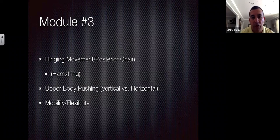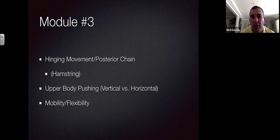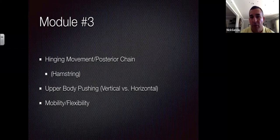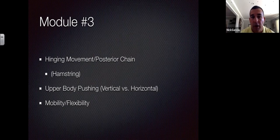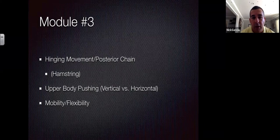Module three, the final module: a hinging movement focused on the posterior chain, primarily the hamstrings. I train all hamstring movements single leg — not a big believer in nordics — because the hamstring functions in athletics on a single leg most of the time. We do single leg RDLs, single leg good mornings, lunging and reaching. We don't necessarily load them extremely heavy; it's for health and sport specificity.